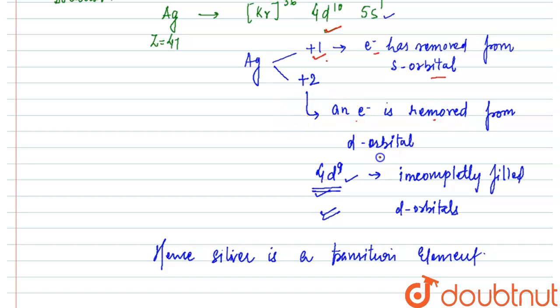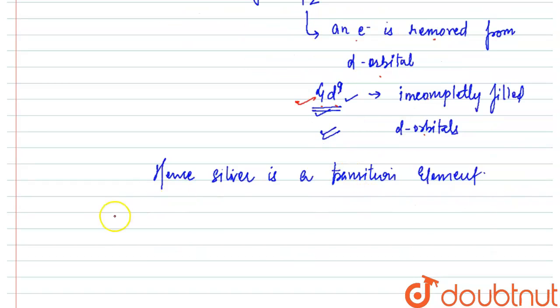But the problem is that when +2 oxidation state shows up, an electron is removed from d orbital, leaving behind a 4d9, which is incompletely filled d orbital. Then, at this stage, we can say that silver is a transition element. So this is how we can explain this question. I hope you all understand things.